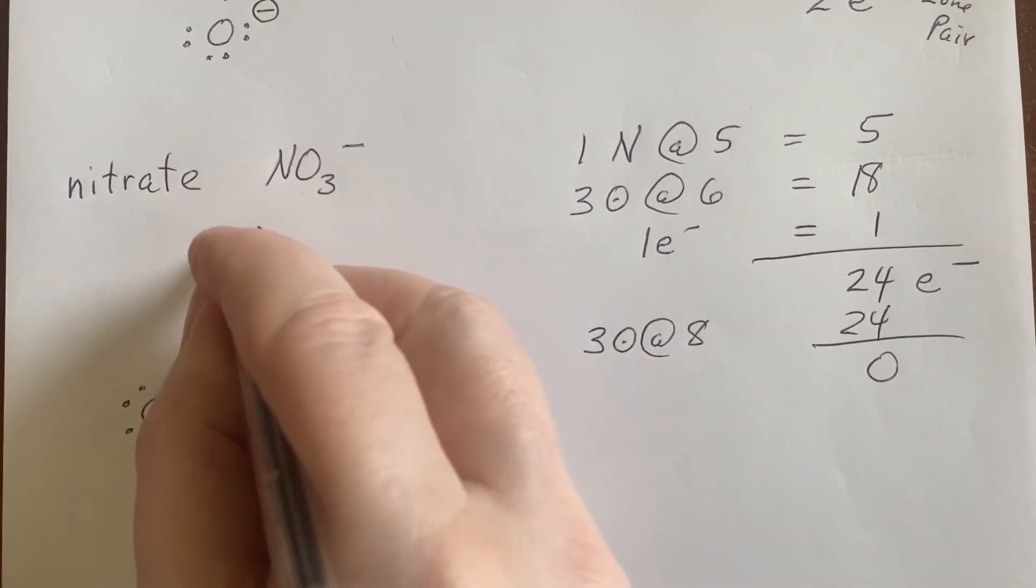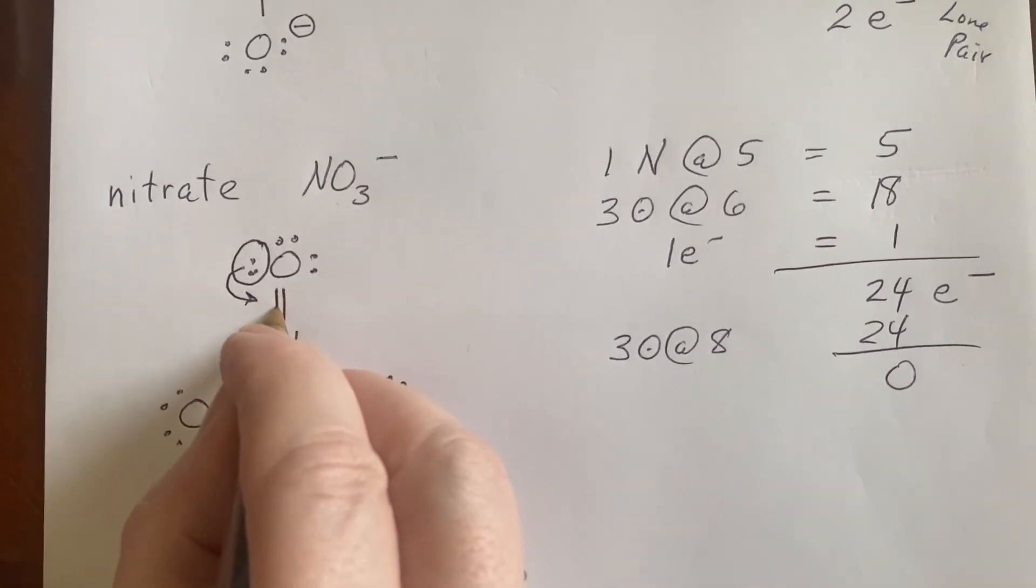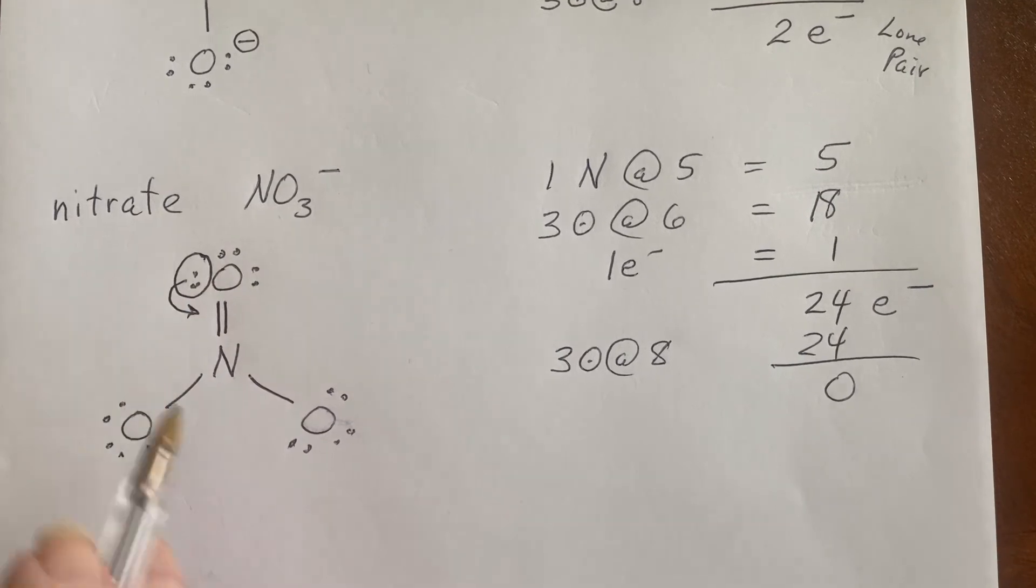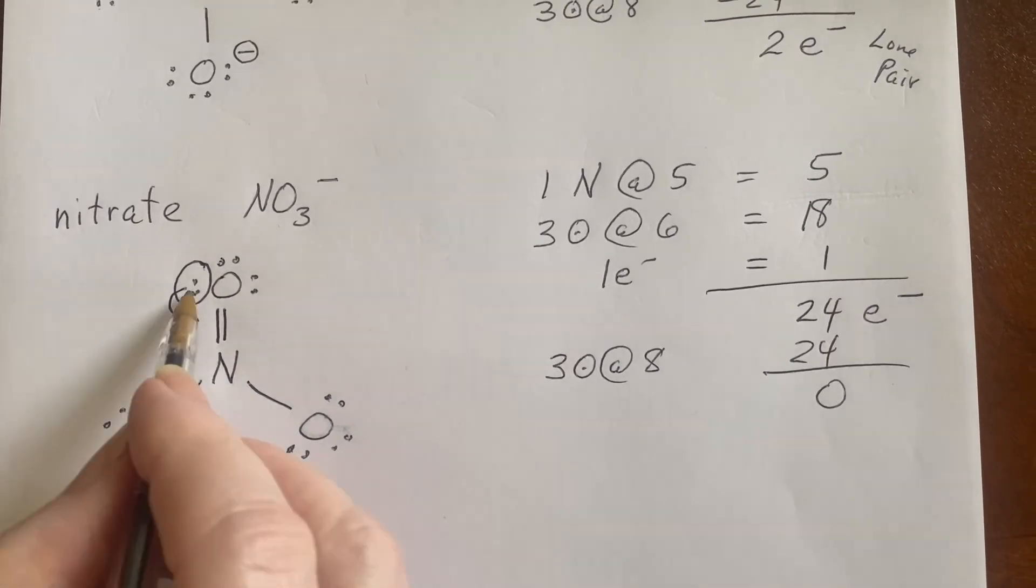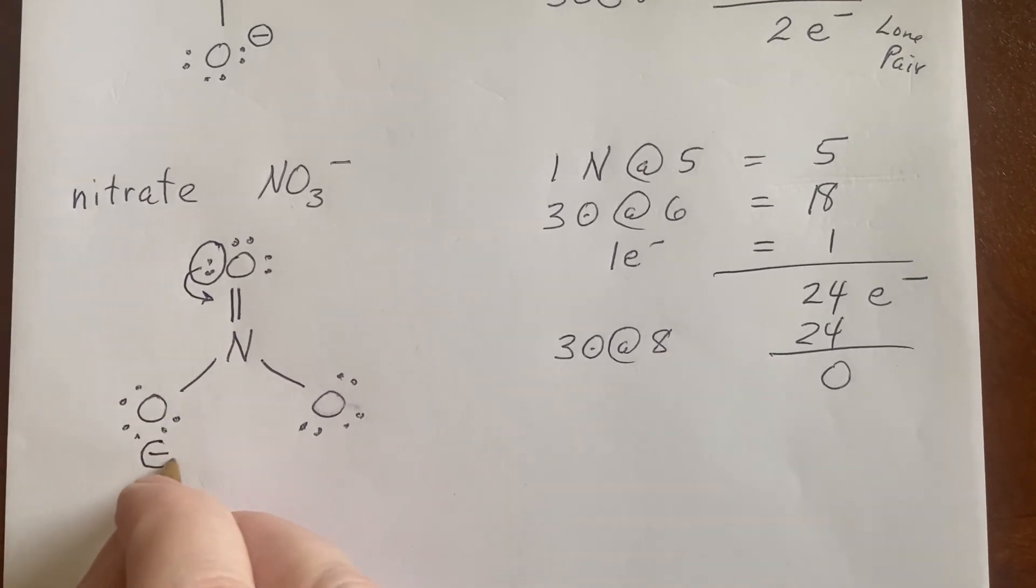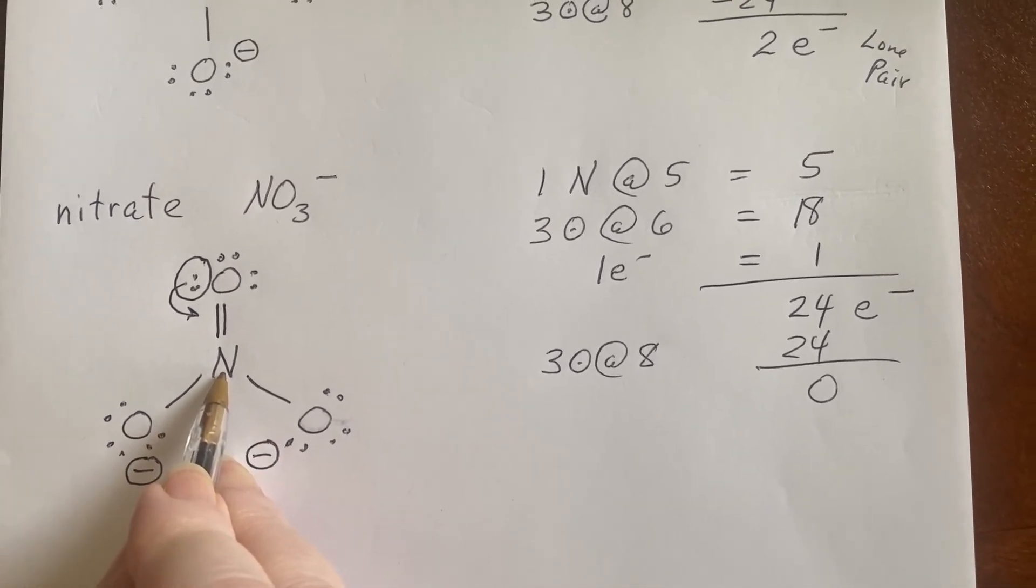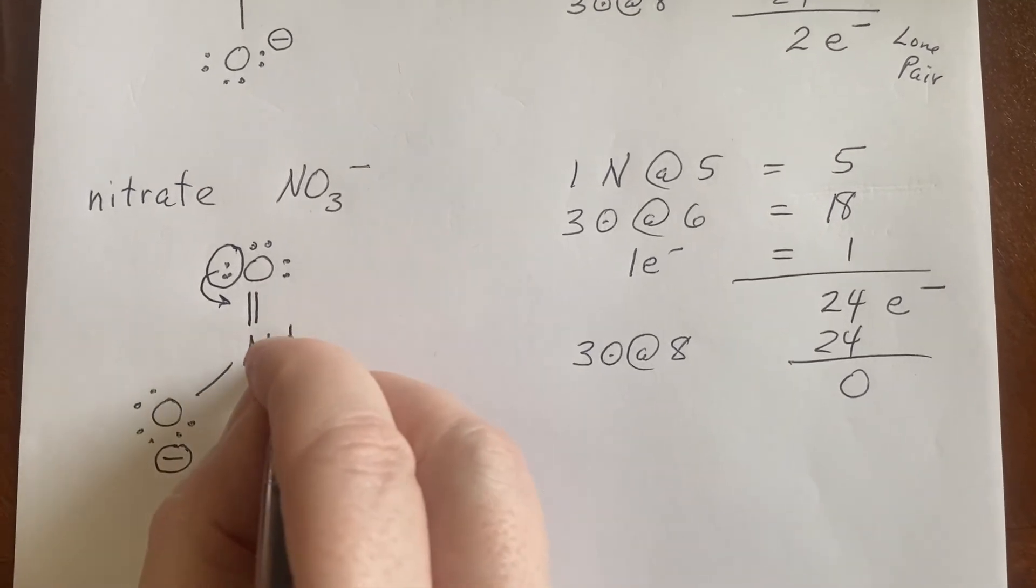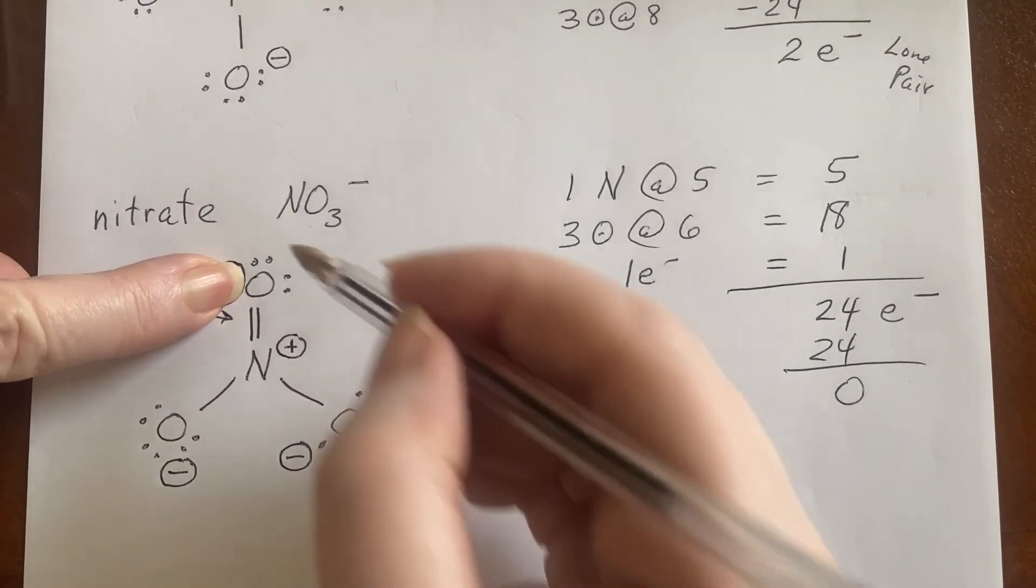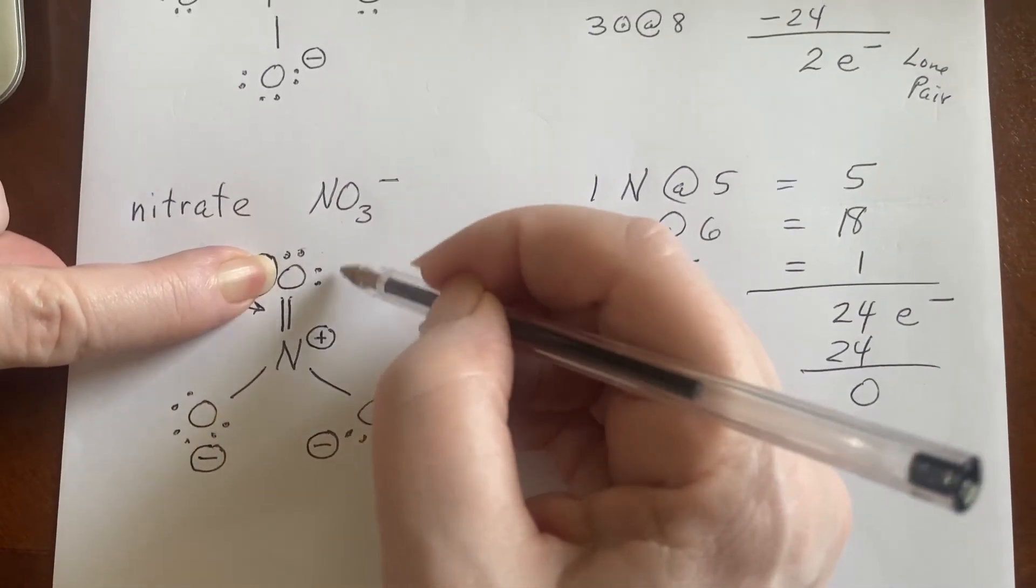So we're going to end up taking one of these lone pairs and saying, you know what, let's make that an additional bond. Now, it wouldn't matter if I did it to this one or that one instead of this one. That would be the three different resonance structures. But here I can just say if I do that, then these will remain with the single negative formal charge. This will get better. Instead of being a plus two, it'll be a plus one for its formal charge. And this one, so this is gone because it went there. Two, four, five, six. Oh, came in with six to have six now. This has a zero formal charge.